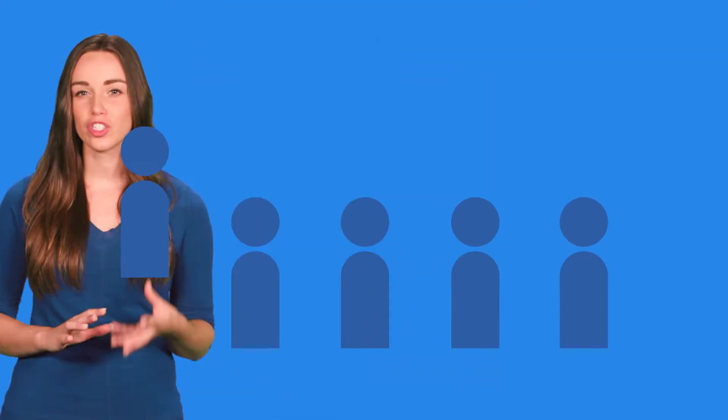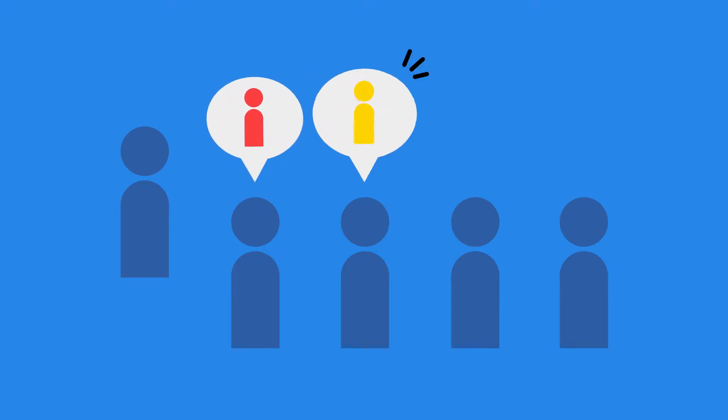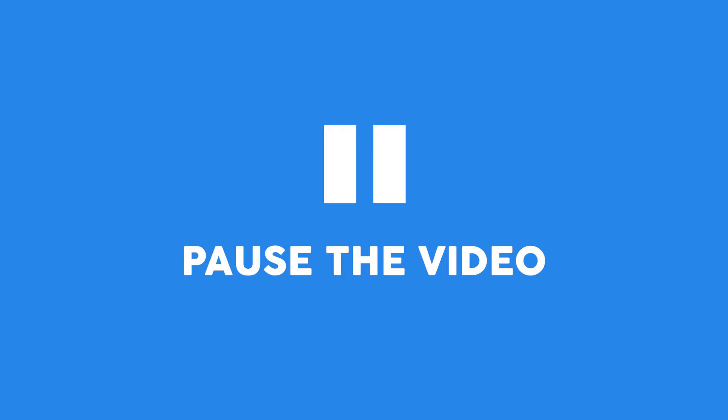When everybody's finished writing, choose a person in the group and one by one tell that person where you place them. Then the person tells the group where they place themselves.